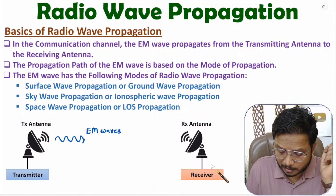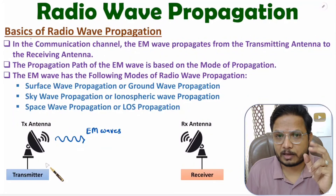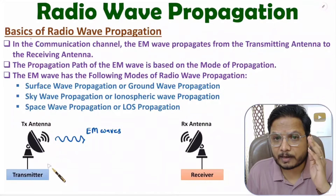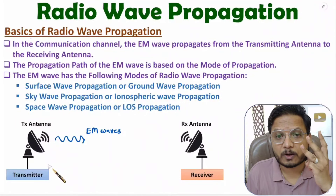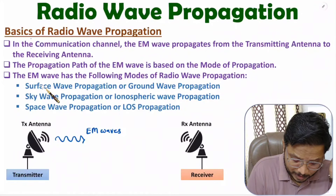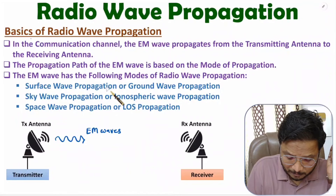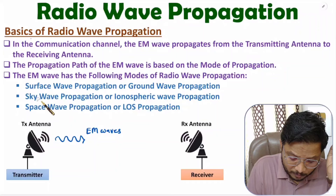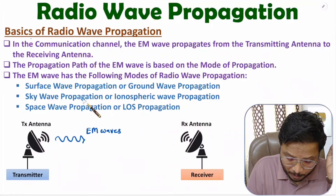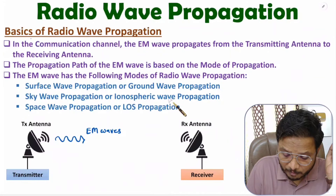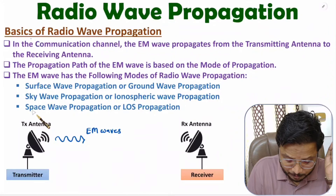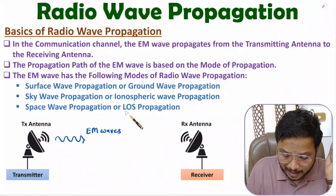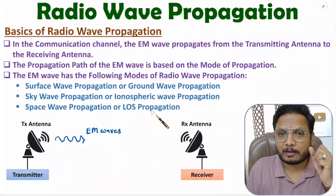This is a simple model of a communication system. If you talk about the practical situation of radio wave propagation, there are three different modes of propagation. The first mode is surface wave propagation, also known as ground wave propagation. The second mode is sky wave propagation, also referred to as ionospheric wave propagation. The third mode is space wave propagation, also known as line of sight propagation.